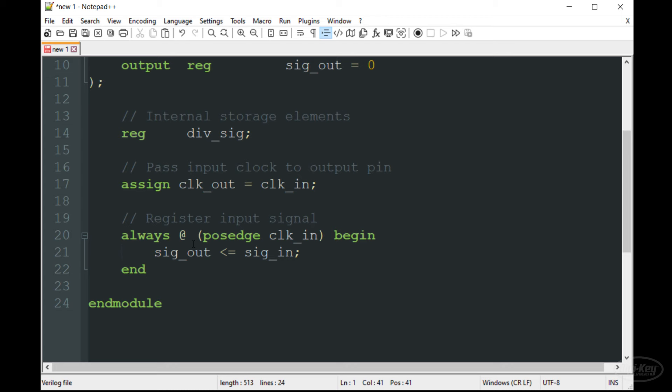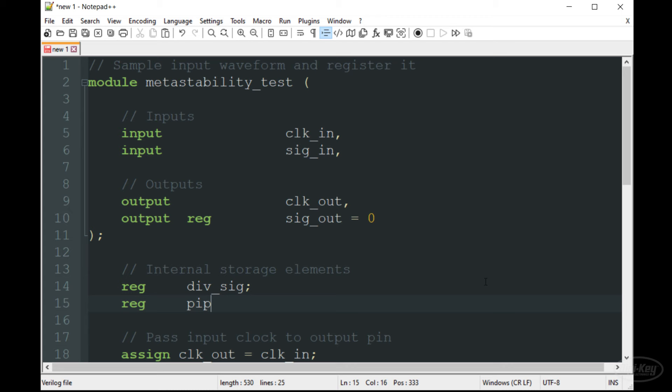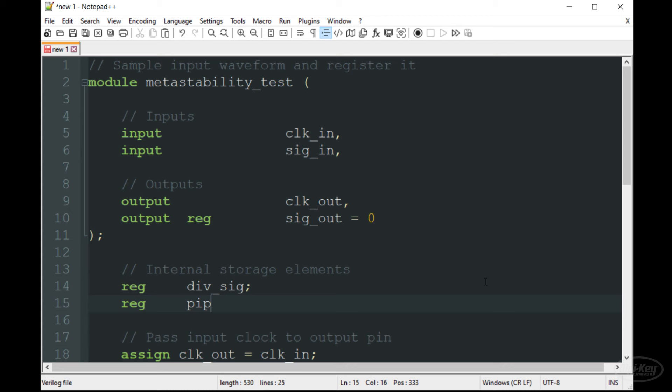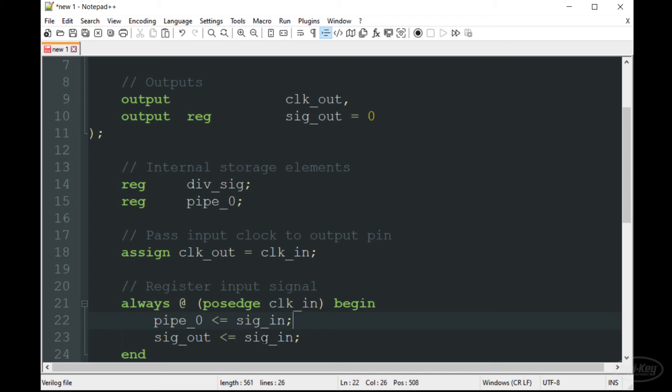Here's a simple flip flop example where the input might be an asynchronous signal. To create a synchronizer, we will define a new register element. I'll call it pipe zero. Then we use a non-blocking assignment to register the input signal to the pipe register. We add another line to register the contents of the pipe register to the output register and that's it.